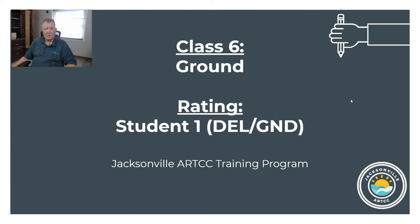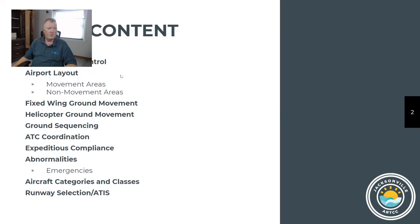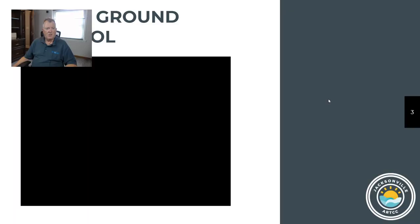We're going to talk about the following topics: airport layout, fixed wing ground movement, helicopter ground movement, sequencing, air traffic control coordination, what expeditious compliance means, abnormalities, aircraft categories and classes, and runway selection. There's quite a bit here. The ground control section is going to be two videos listed in the description — please pause, minimize this video, and go watch those two videos before you proceed with these slides.